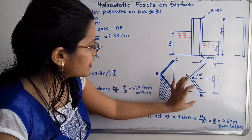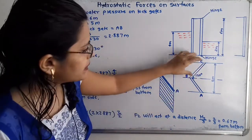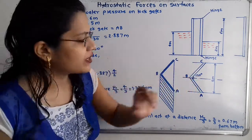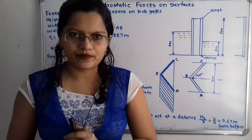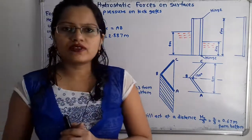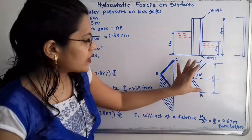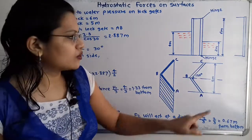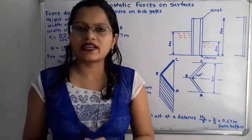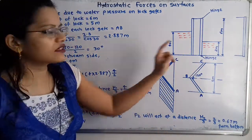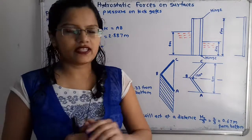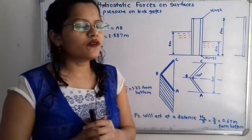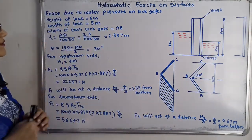If we observe here AB and BC, the angle between AB and BC is 120 degrees. The total width of the lock gate is 5 meters as given. In this way as per the given data we have to construct this lock gate, that is the front view as well as top view.